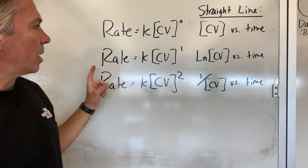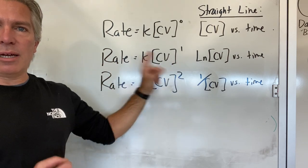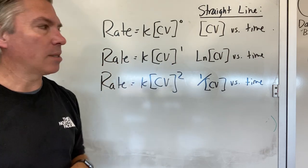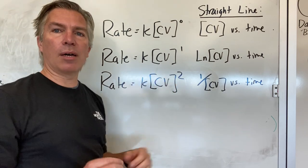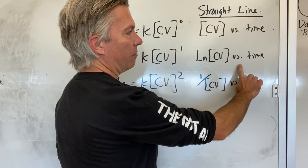However, if the reaction is first order, meaning the rate is dependent on how much crystal violet is remaining at any given time, then a different plot will give me a straight line, and that will be the natural log of crystal violet versus time.